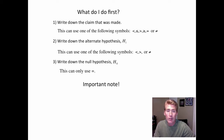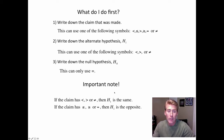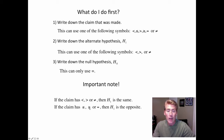An important note about the alternate hypothesis: if the claim has a less than, a bigger than, or a not equals, then H1 just uses one of those symbols — whatever it is — so H1 would be the same as the claim. If the claim has a less than or equal, bigger than or equal, or an equals in it, then you have to use the opposite. Equals and not equals are opposites. For bigger than or equal, you use the opposite direction and it can't have an equals, so the opposite would be less than. Likewise, the opposite of less than or equal is greater than.